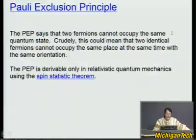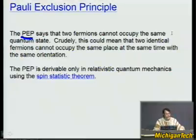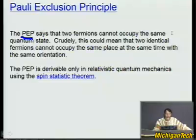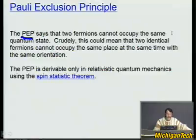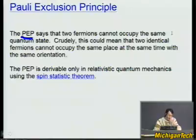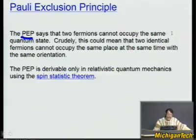The Pauli exclusion principle — conveniently abbreviated — states that two fermions, which are particles with half-integer spin (such as one-half or three-halves in units of h-bar, Planck's constant), cannot occupy the same quantum state. They can't all be in the ground state. Electrons are fermions, and they can't all be in the ground state of hydrogen. Crudely, you might interpret this as two fermions cannot occupy the same place at the same time with the same spin orientation. This has been an observed fact for quite a while, and it is derivable from something called the spin-statistics theorem in relativistic quantum mechanics.